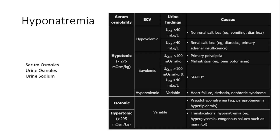If urine osmoles are greater than 100 and urine sodium is also greater than 40, then it is SIADH. The last category is hypovolemic state, which involves easy water loss — either GI with urine sodium less than 40, or renal with urine sodium greater than 40, as with diuretics or adrenal insufficiency.